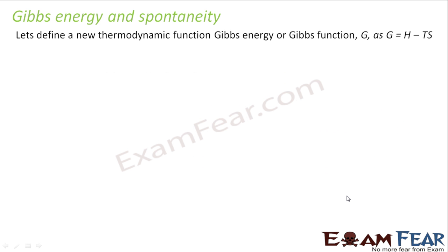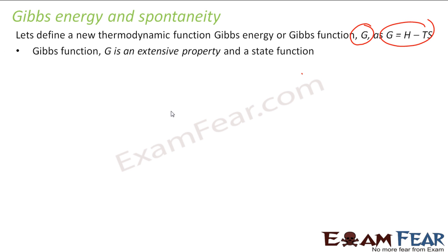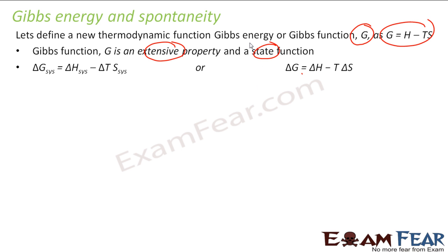It's a new thermodynamic function we have derived just now. It is denoted by G, and G is nothing but H minus TS. It is an extensive property and a state function, similar to most other thermodynamic properties. Delta G of the system is nothing but delta H of the system minus T times delta S of the system.